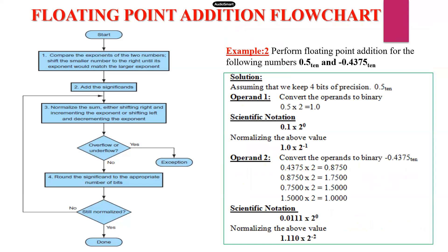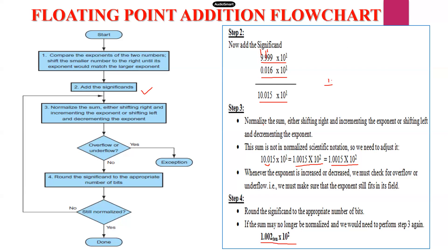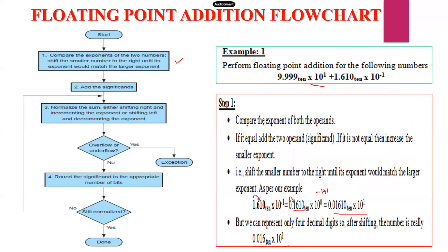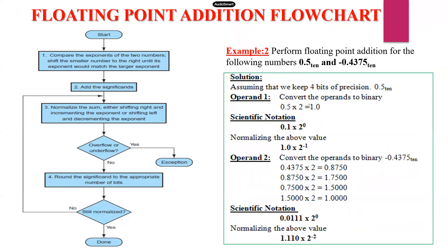Example 2: perform floating point addition for the following numbers — 0.5 base 10 and −0.4375 base 10. In the previous example the exponent value was given directly, but here it is not given directly, so we must calculate the exponent value.